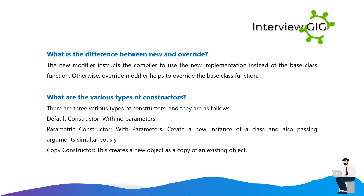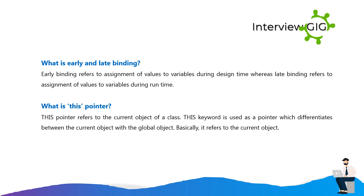What are the various types of constructors? There are three types of constructors: default constructor with no parameters; parametric constructor with parameters, which creates a new instance of a class and also passes arguments simultaneously; and copy constructor, which creates a new object as a copy of an existing object. What is early and late binding? Early binding refers to assignment of values to variables during design time whereas late binding refers to assignment of values to variables during run time. What is this pointer? This pointer refers to the current object of a class. This keyword is used as a pointer which differentiates between the current object with the global object. Basically, it refers to the current object.